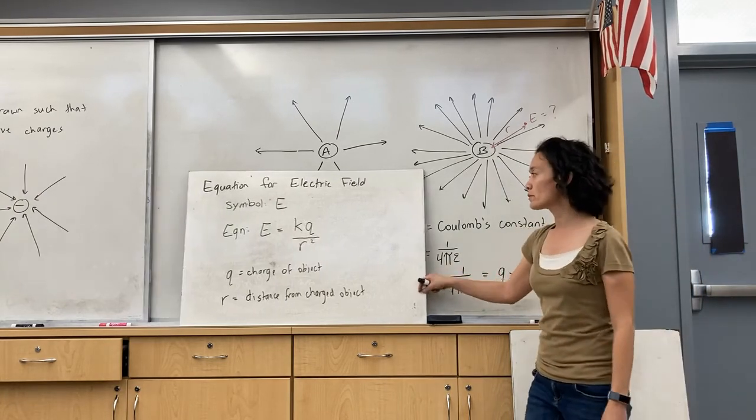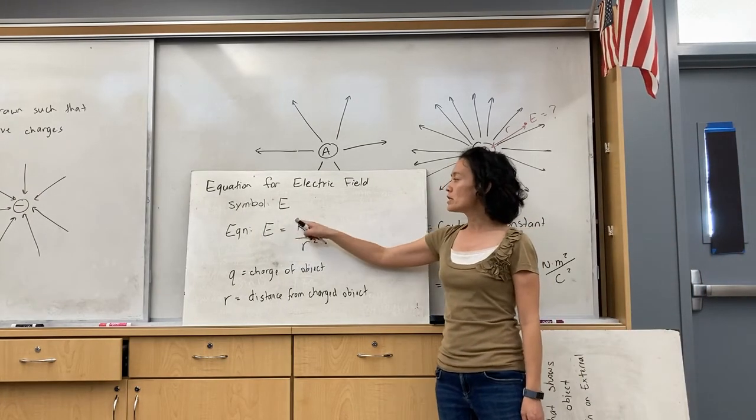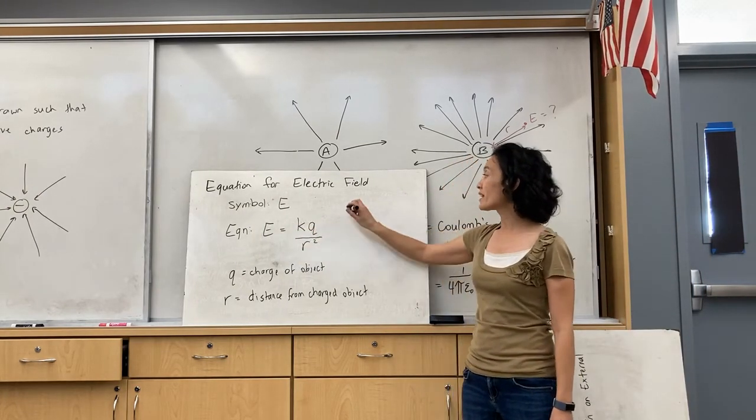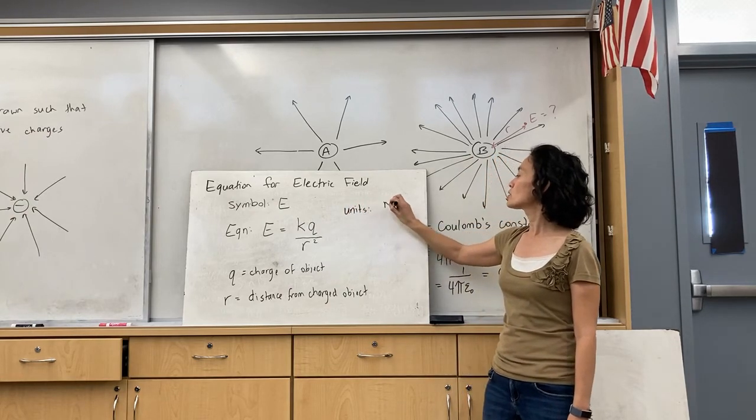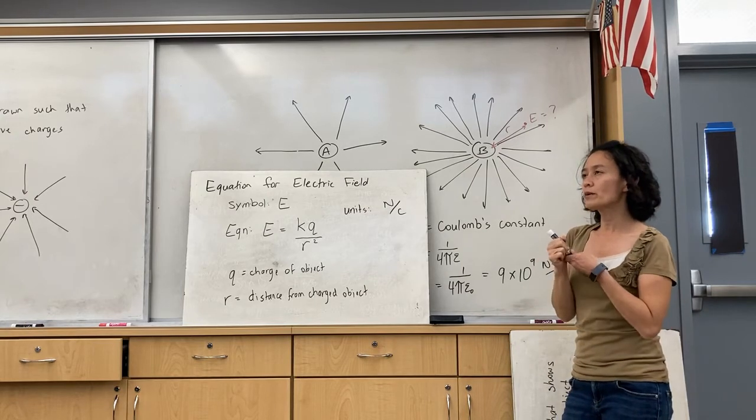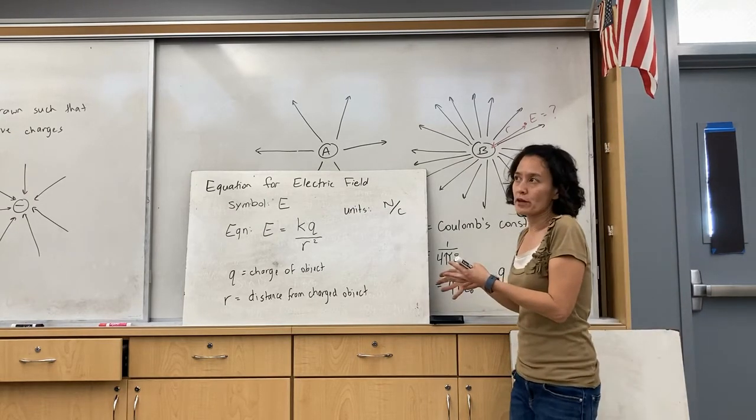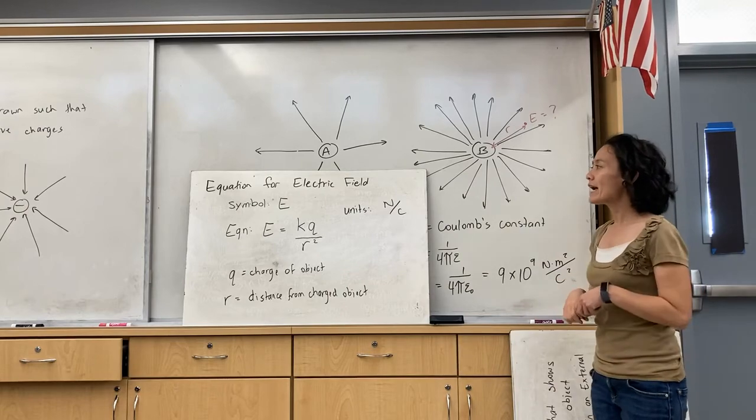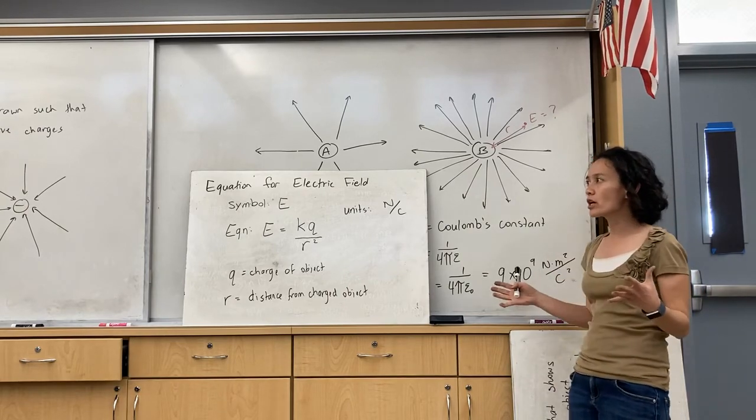So that's the equation. So the symbol is E. The equation is E equals KQ over R squared. And the units for electric field are Newtons per Coulomb. And it's kind of looking at how many Newtons would be affecting a particular charge. So that is kind of an intro to the concept of electric field.